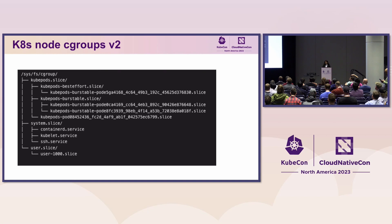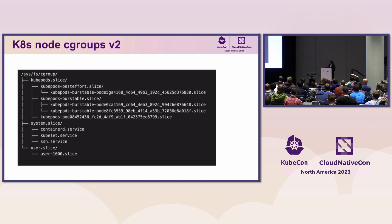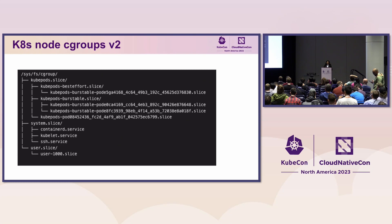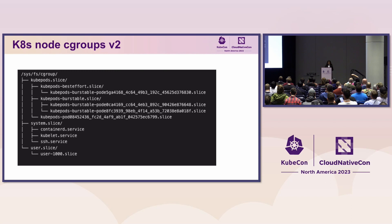A general Kubernetes node with Cgroups V2 configured will have three slices: the kubepods slice, the system slice, and the user slice. The system slice holds configuration for system services like containerd, kubelet, etc. The kubepods slice then has Cgroup files — slices for each QoS class Kubernetes supports. When you create a pod, kubelet creates the Cgroup for the pod and places those files inside the QoS directory to which the pod belongs — best effort, guaranteed, or burstable. The pod Cgroup path is then passed to the container runtime, which creates and manages Cgroups for the containers.